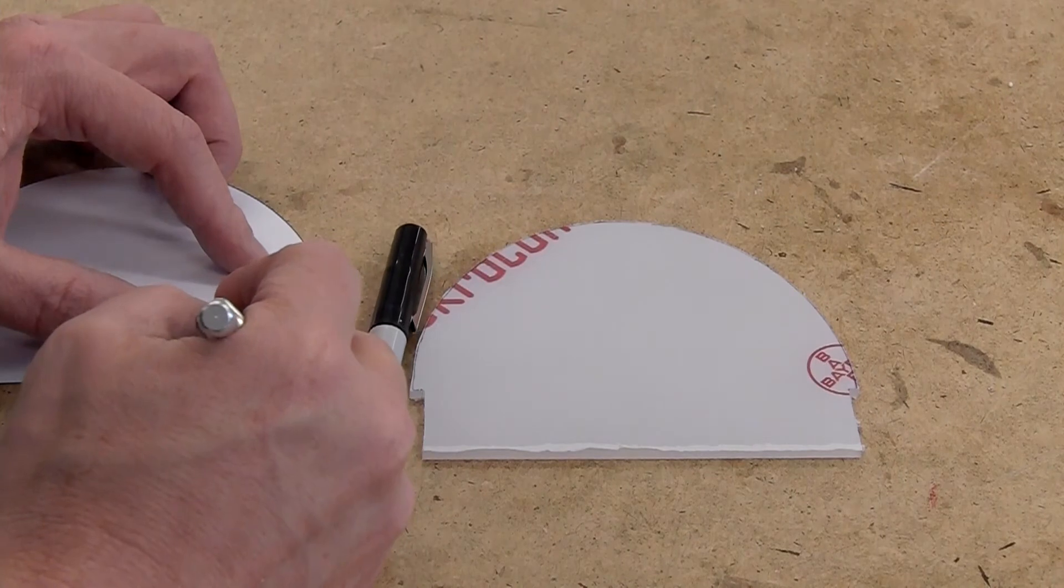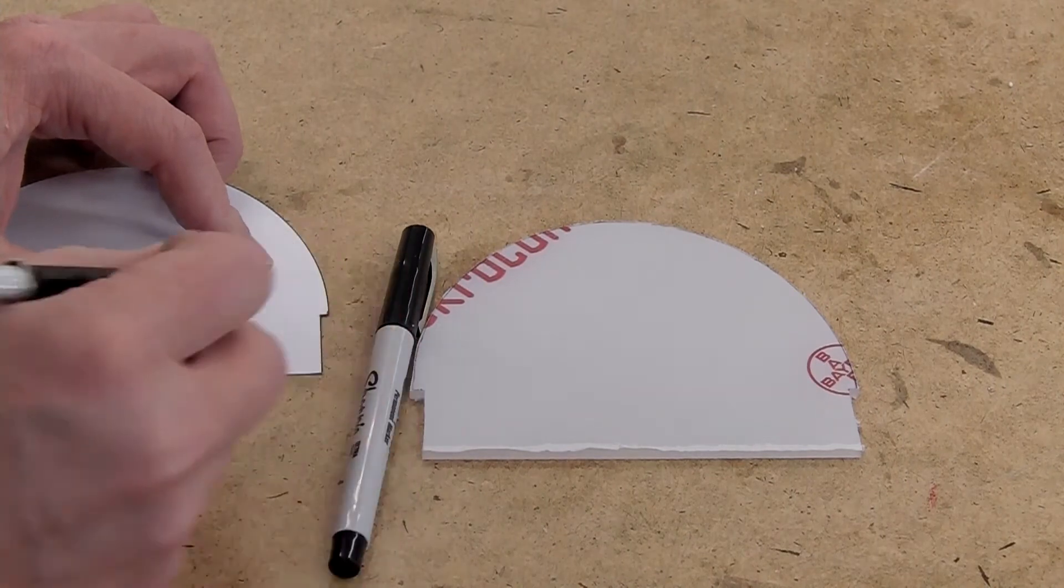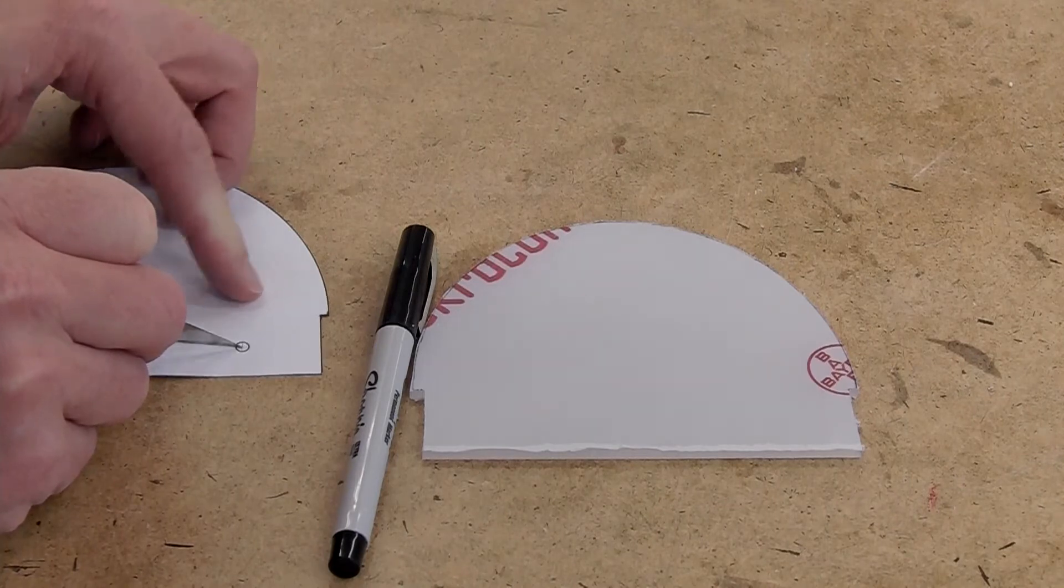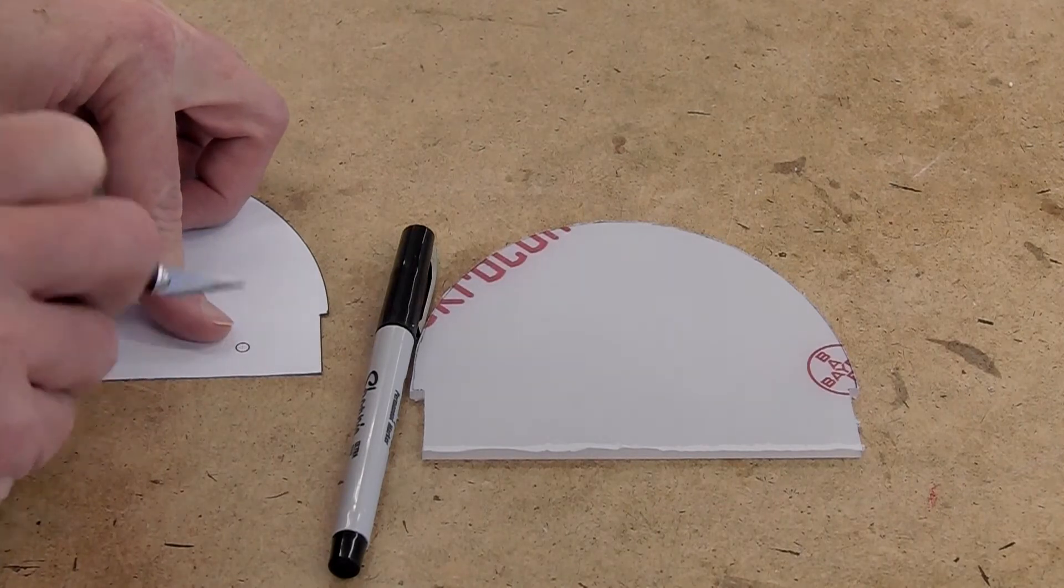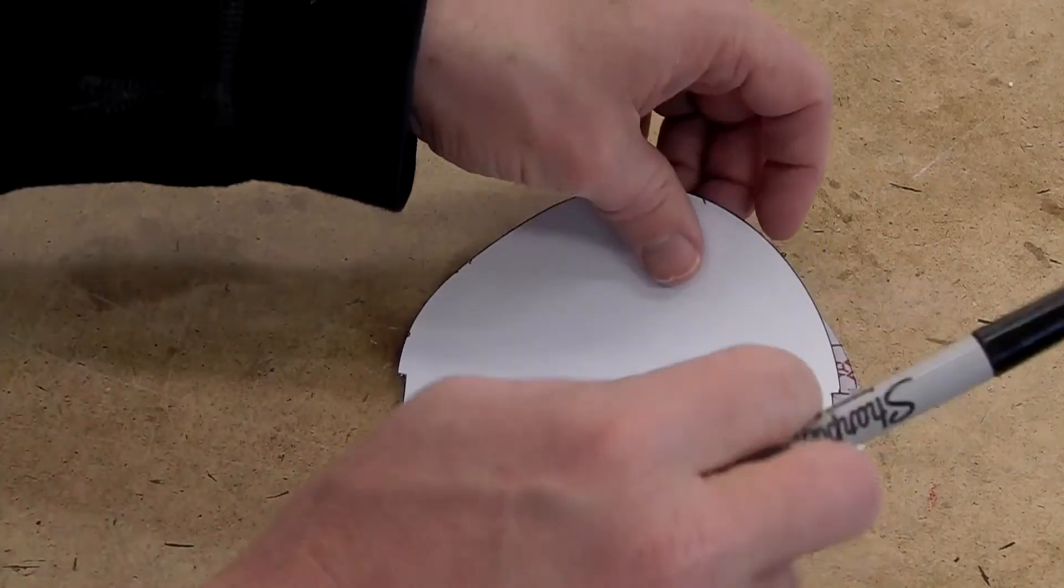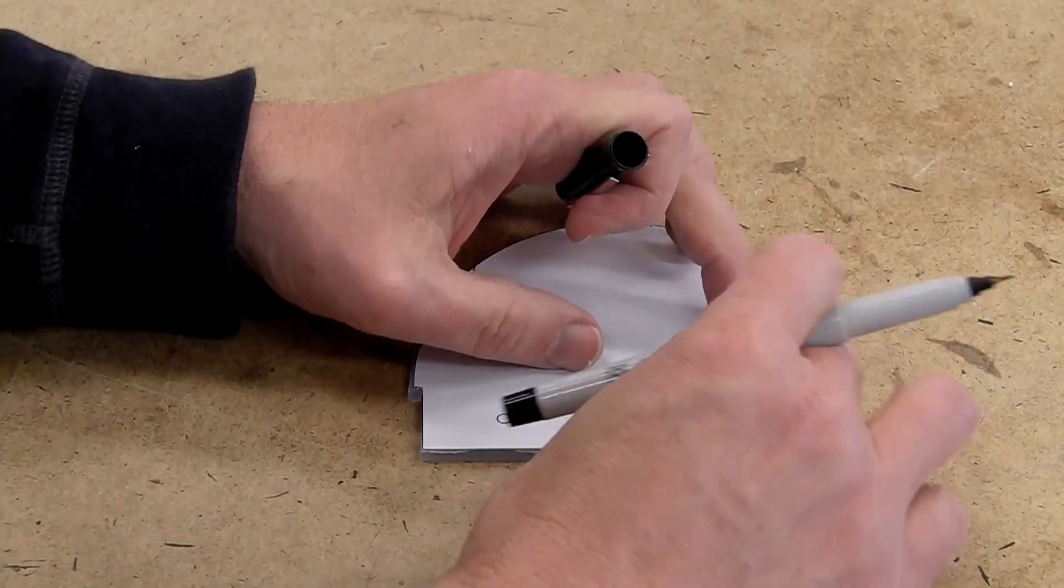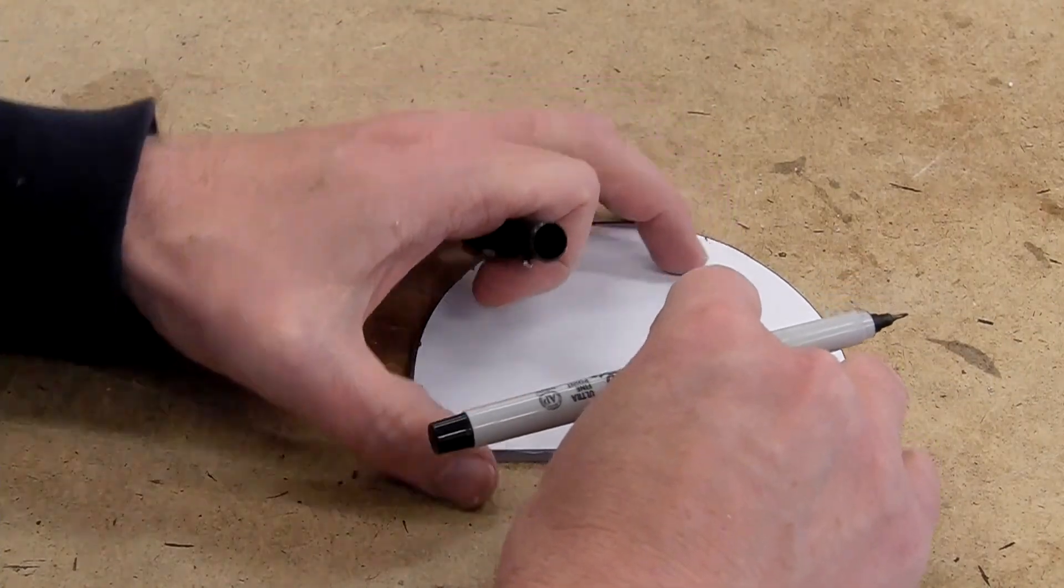Next we have to mark the holes for mounting. Cut a slot in the center of the holes on the template so that the pen can go through, then place the template in place on the part and mark through the hole in the template.